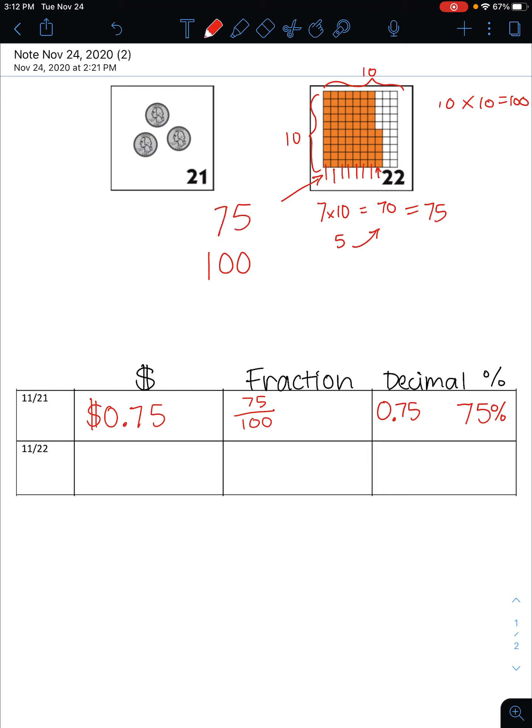So 75 out of a total 100 squares are colored in in this picture. That gives me my fraction format: 75 hundredths. I notice that my fraction for the picture on the 22nd is the same as the fraction for the picture on the 21st.